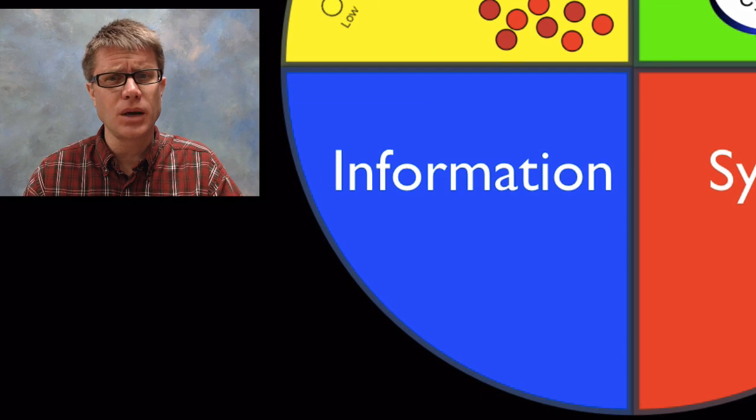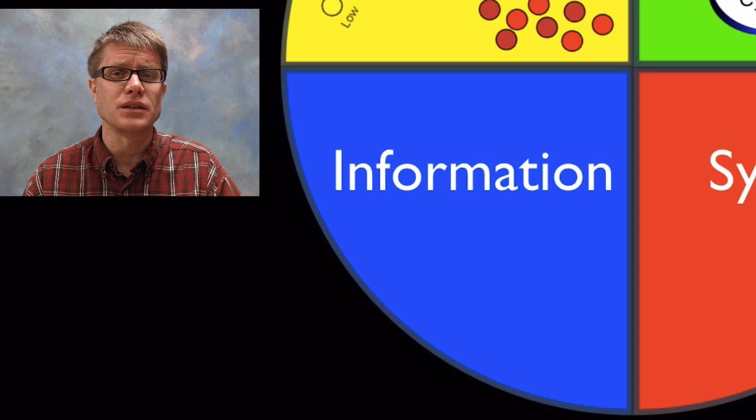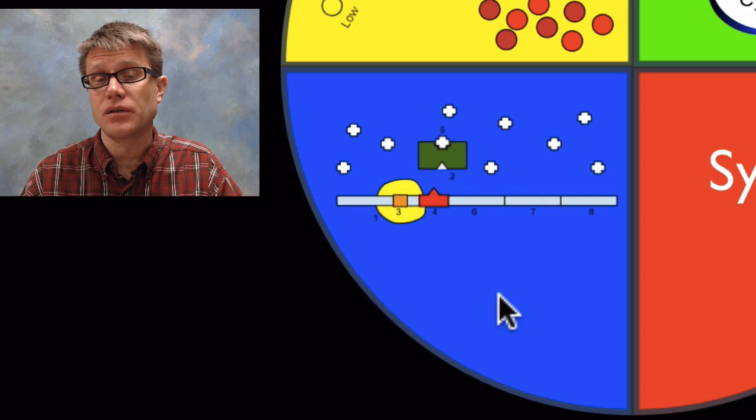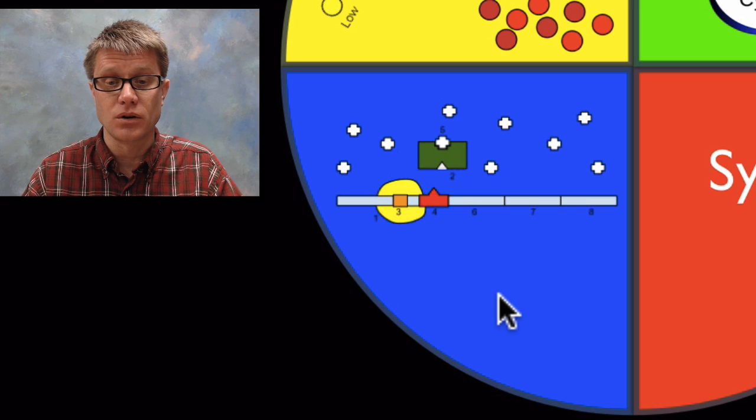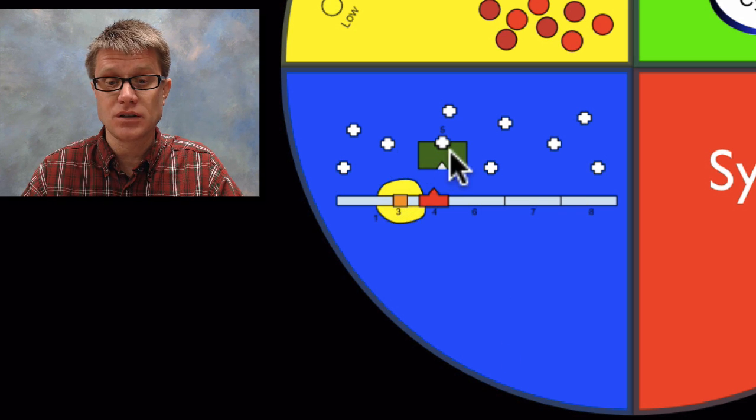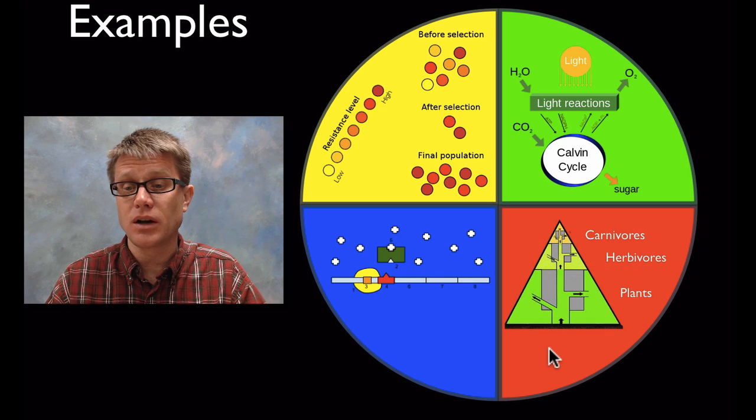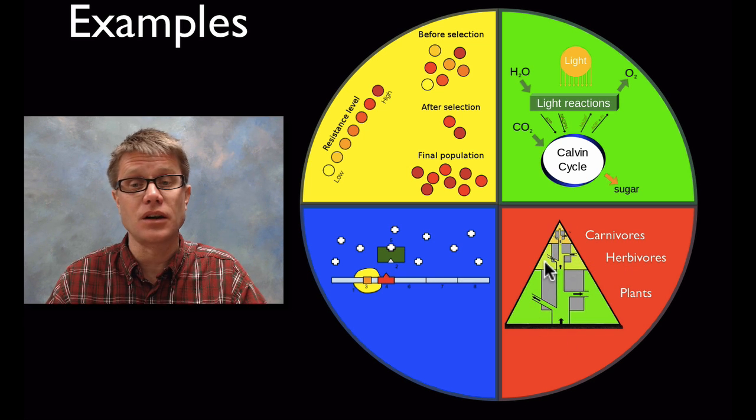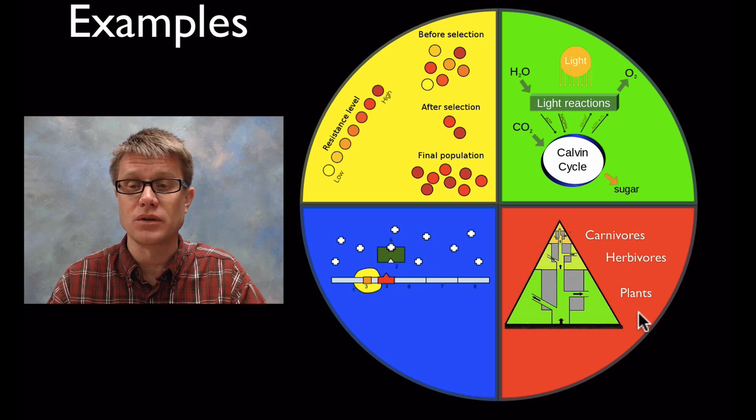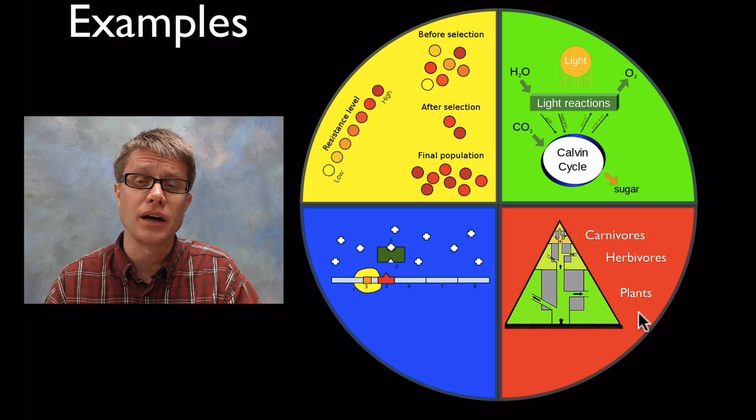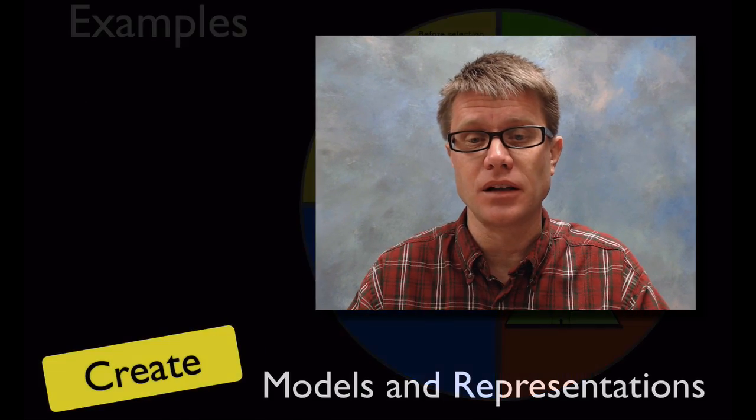What if we're looking at information flow? Remember that deals with things like genetics and cell communication. This would be a great example of a model. This shows you how an operon works. And so this is going to be our RNA polymerase and we have a repressor here. Or maybe if we're looking at systems a great model could be this pyramid of energy showing carnivores, herbivores and plants. And so this gives you an idea of what a model looks like and how it could be applied in an AP Biology class.